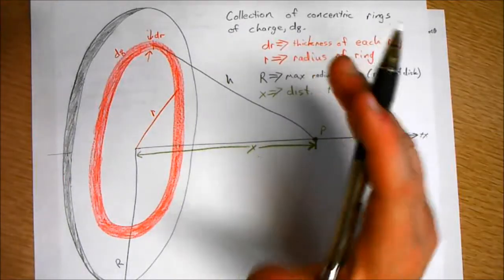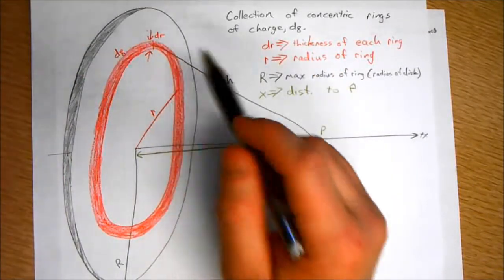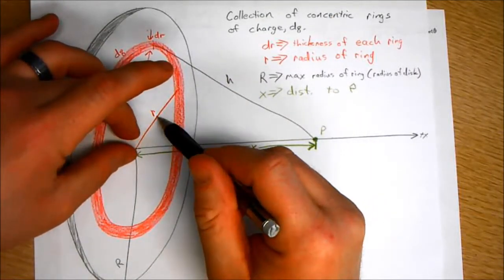So what we're going to do is we're going to look at the charge due to each one of these rings, and we're going to sum all the rings from R equals zero to R equals capital R.